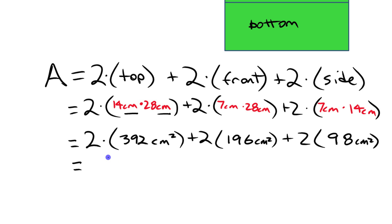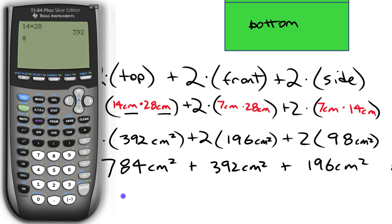So this first one, two times 392 is actually 784. Again, go to your calculator if you want to check that. And the area of that front and back together, two times this is going to be 392. And the area of the two sides is going to be 196. If we add that all together, let's go to the calculator for this just to make sure. We have 784 plus 392 plus 196.